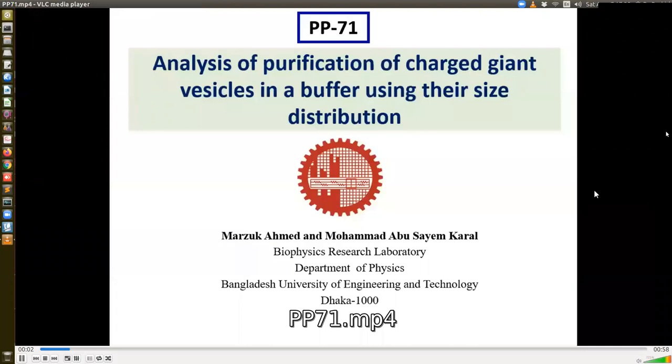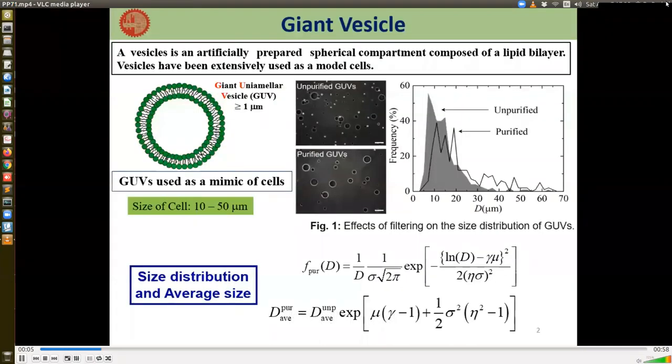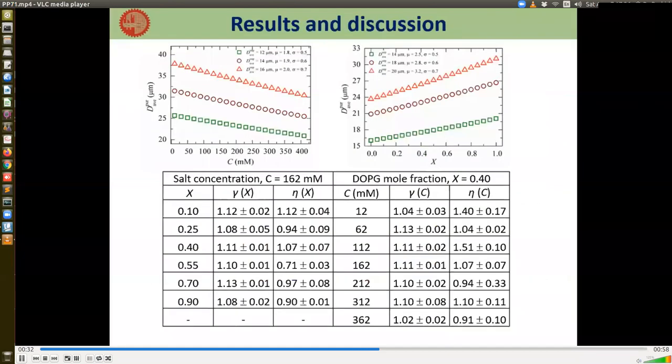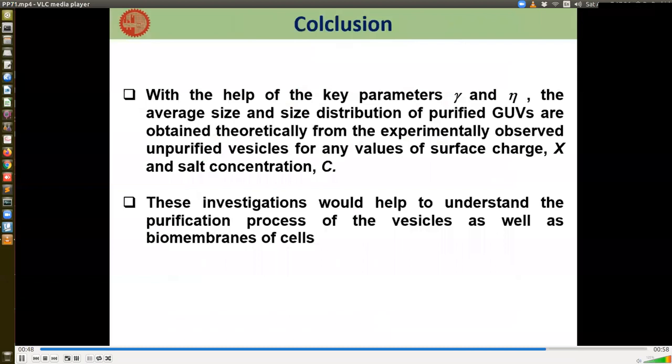Myself Marjuka Akhter from Biophysics Research Laboratory, Department of Physics, BUET. Giant unilamellar vesicles, GUVs, are mimic of biological cells. Purification of GUVs is necessary to remove lipid aggregates and smaller vesicles. Hence GUVs can be used in various research such as cancer cell destruction experiments, drug delivery, interaction with nanoparticles and peptides. We have analyzed the purification of charged GUVs in a physiological buffer and found two key parameters - gamma and eta. The parameters gamma and eta were determined experimentally which were useful for analysis of purification of GUVs and also for estimation of average size of purified vesicles without doing experiments. These investigations would help to understand the purification process of the vesicles as well as the biomembranes of cells. Thank you.